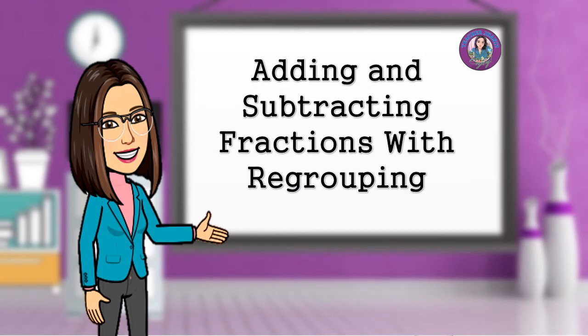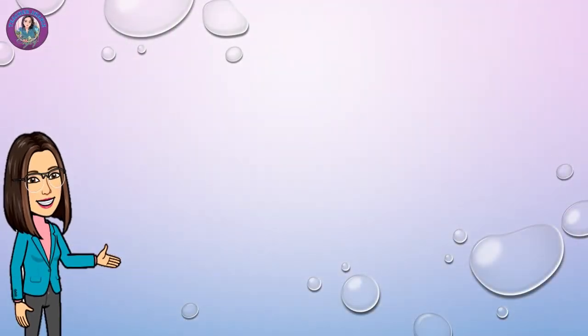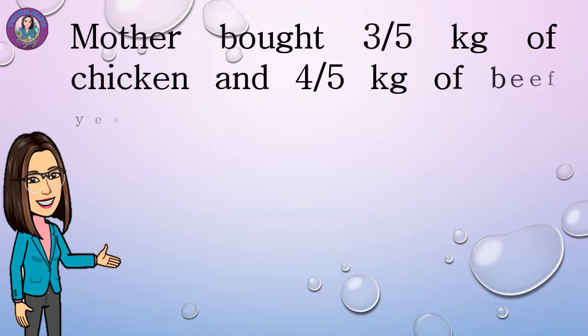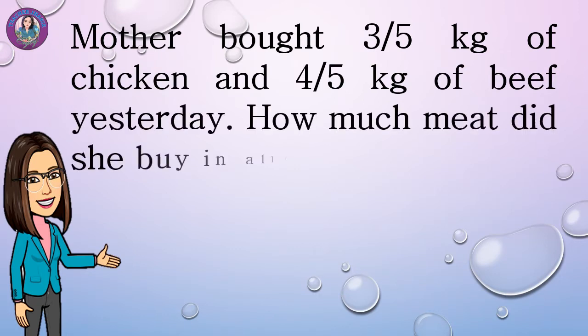Adding and subtracting fractions with regrouping. Let's have a story problem. Mother bought three-fifths kilogram of chicken and four-fifths kilogram of beef yesterday. How much meat did she buy in all? Seven-fifths, or one-and-two-fifths kilograms of meat.